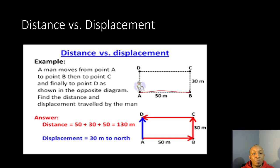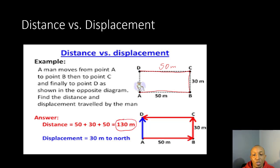Let's look at distance versus displacement. A man moves from point A to point B, then to point C, then finally to point D as shown in the diagram. He travels 50 meters from A to B, then another 30 meters from B to C, and another 50 meters from C to D. Adding those up: 50 plus 30 is 80, and 80 plus 50 gives us a total distance of 130 meters. Now for displacement — the man started here at his frame of reference and ended up at point D, but he is actually only 30 meters away from his starting point.